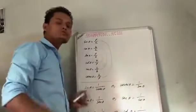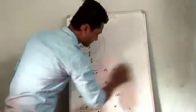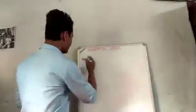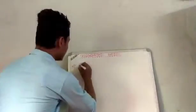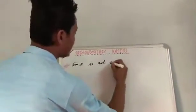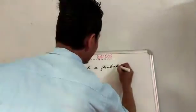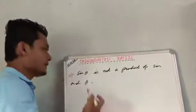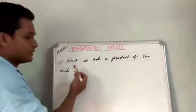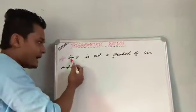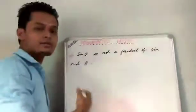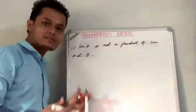These are the formulas you have to learn to solve trigonometric problems. Now, one important thing to note: sin θ is not a product of sin and θ. The term sin θ — here sin and θ are not two different terms, this is a single term. In the same way, cos θ is not a product of cos and θ. All other trigonometric ratios are of the same type.